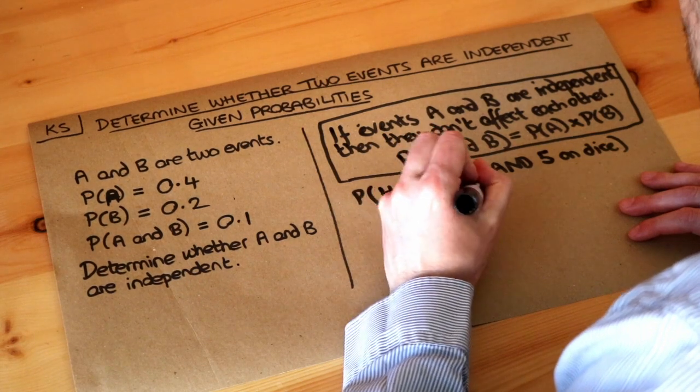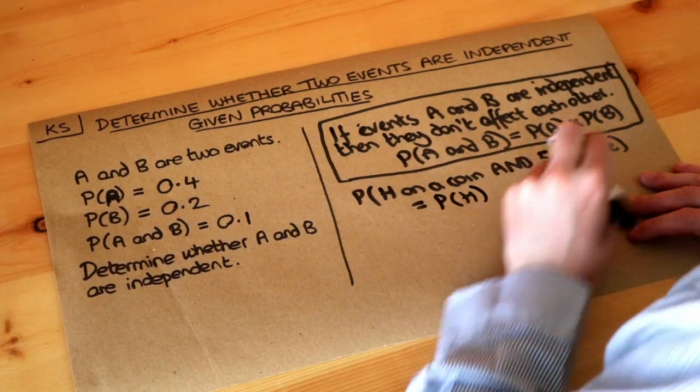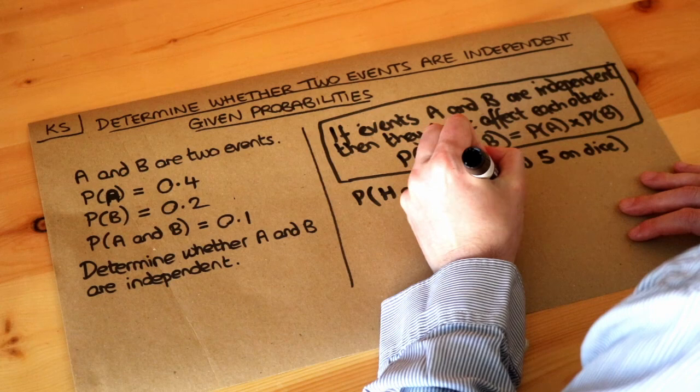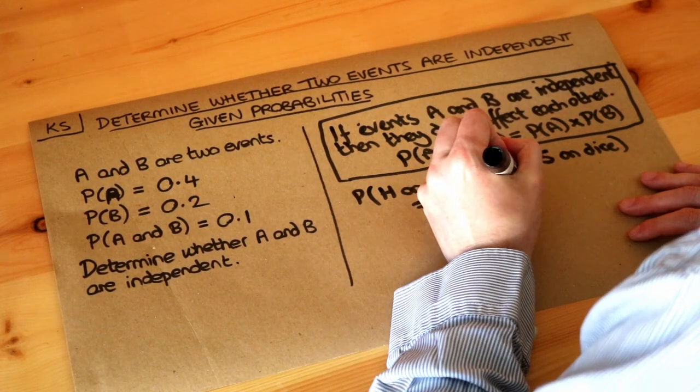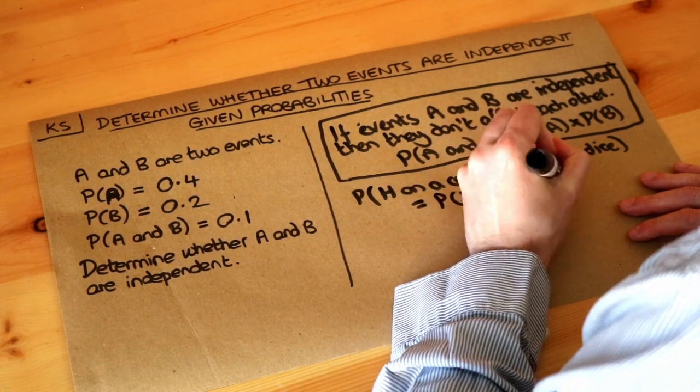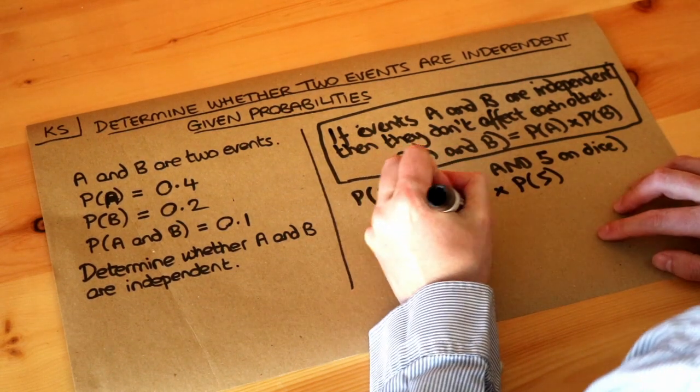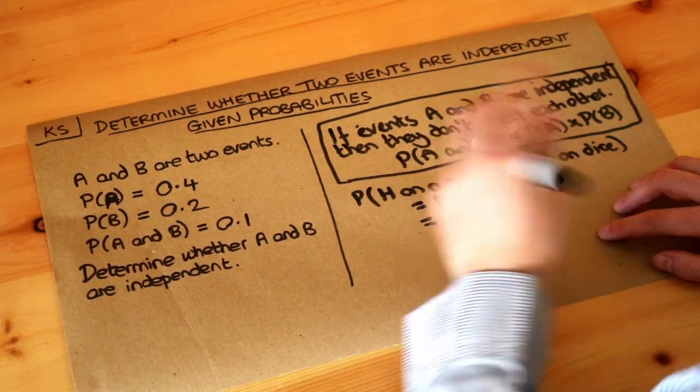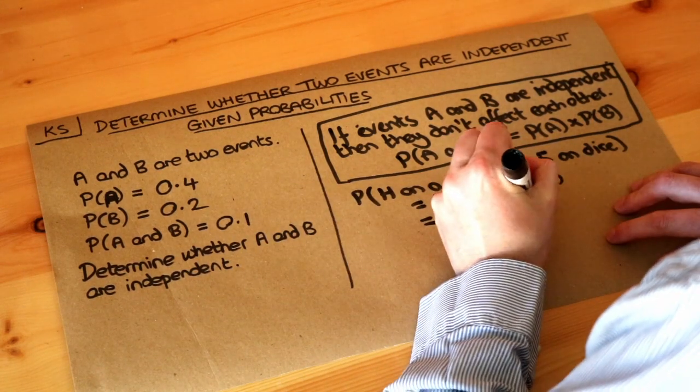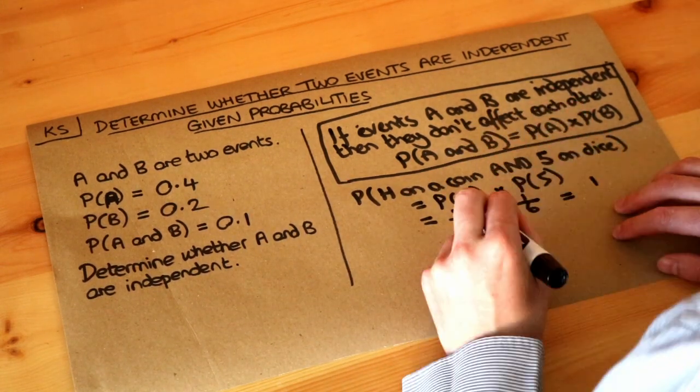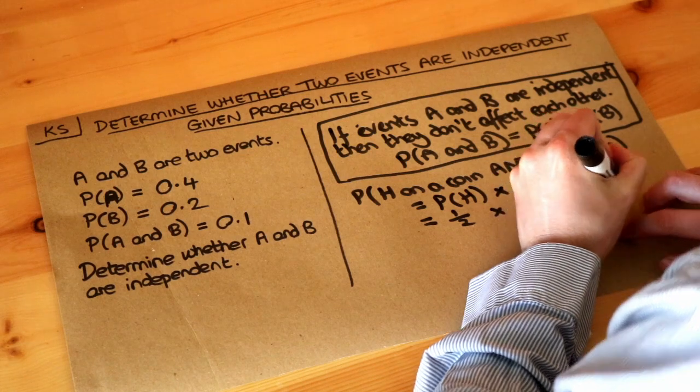They don't affect each other and we can therefore use this formula. We can just do the probability of getting the head on the coin and then the five, we find the probability of five on the dice. The probability of getting a heads on a fair coin is just a half, and the probability of rolling a five on a fair dice would just be a sixth, and then a half times a sixth would be a twelfth.